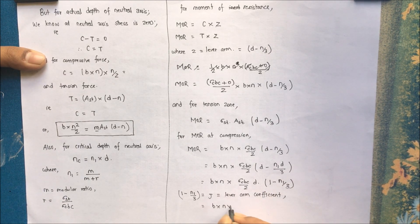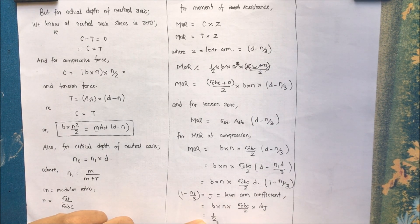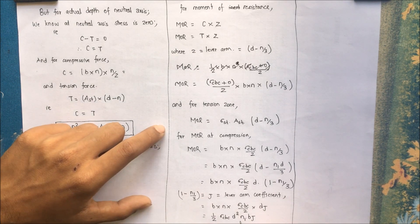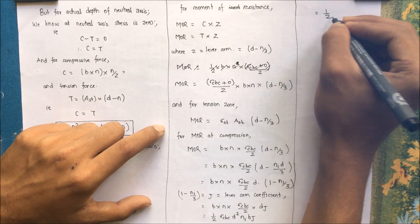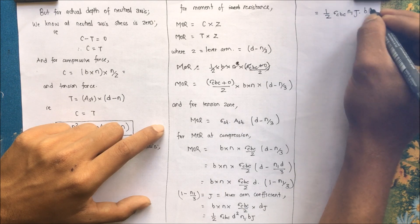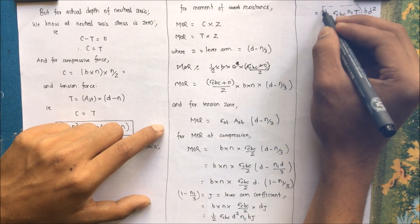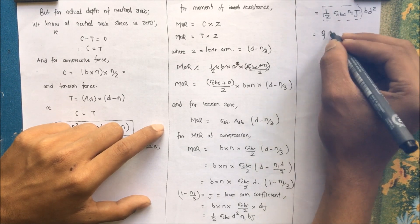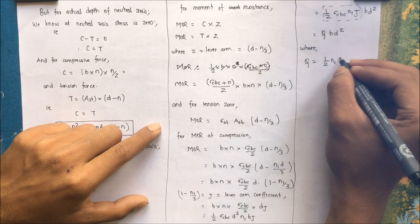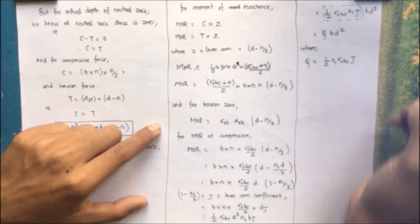The final equation becomes: MOR equals B times N times (Sigma CBC / 2) times D times J. Replacing N with N-dash times D gives MOR equals (1/2) times Sigma CBC times N-dash times J times B times D squared. Replacing the constant term as Q: MOR equals Q times B times D squared, where Q equals (1/2) times N-dash times Sigma CBC times J.